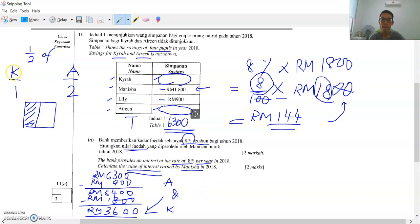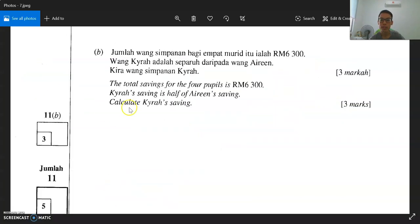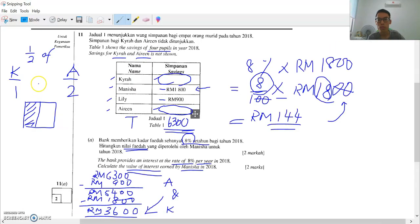Just now, remember the question tells us Kaira's saving is half. Wang Kaira adalah separuh daripada wang Irene. Separuh, so duit Irene lebih banyak, duit Kaira separuh sahaja. So again separuh. If Irene has two ringgit, Kaira will only have one. Separuh, half.